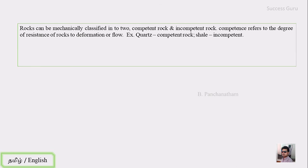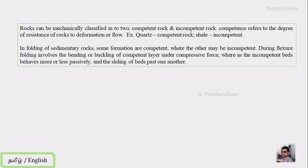The incompetent rock — the best example is shale. In a sedimentary basin, there is a competent rock and an incompetent rock. In the third stage, one competent rock and one incompetent rock show thickening and thinning behavior.